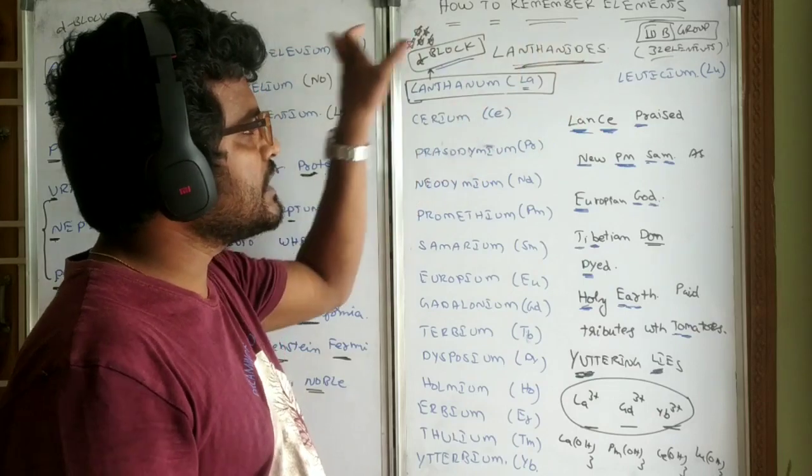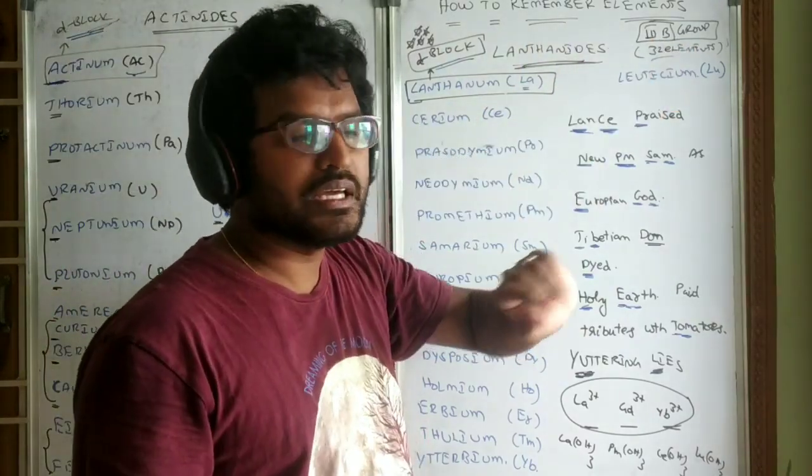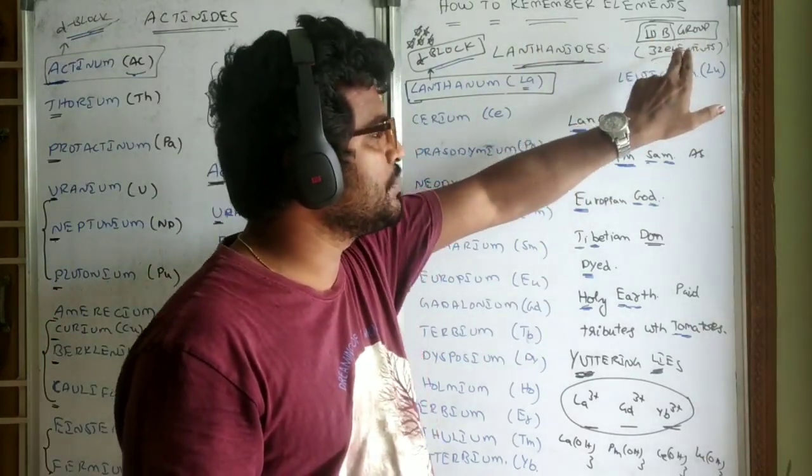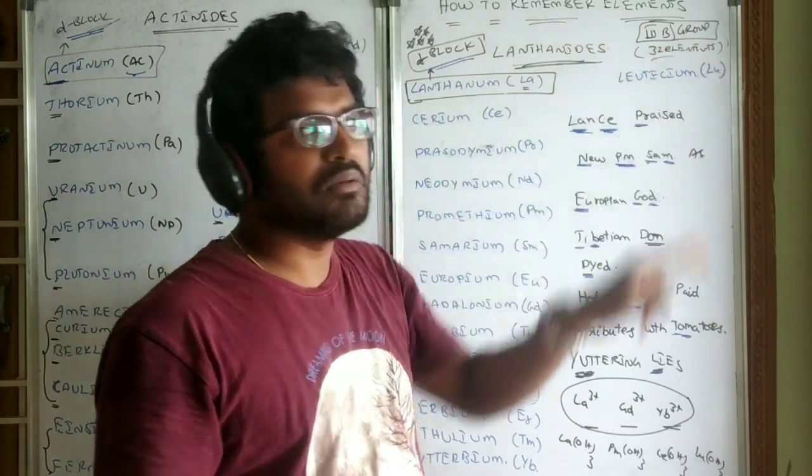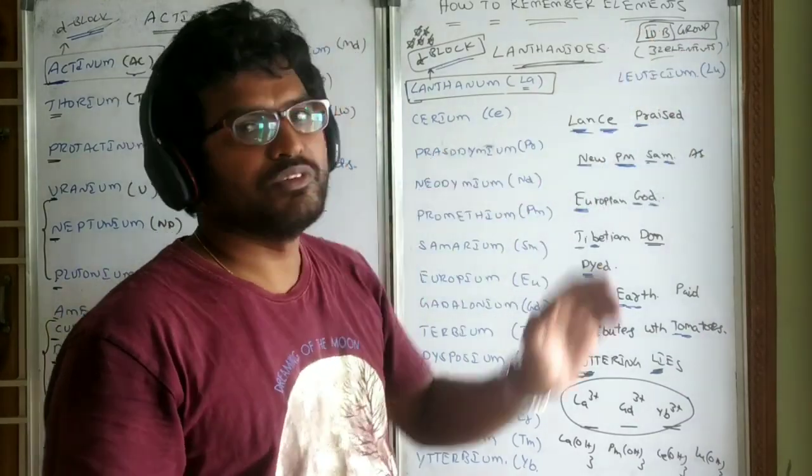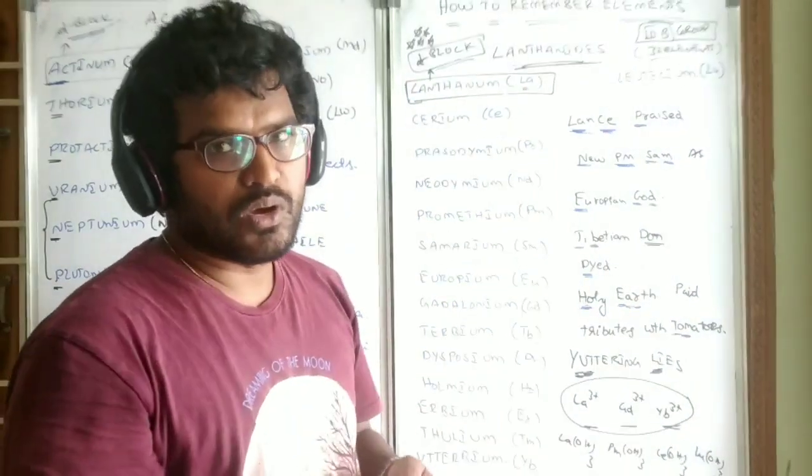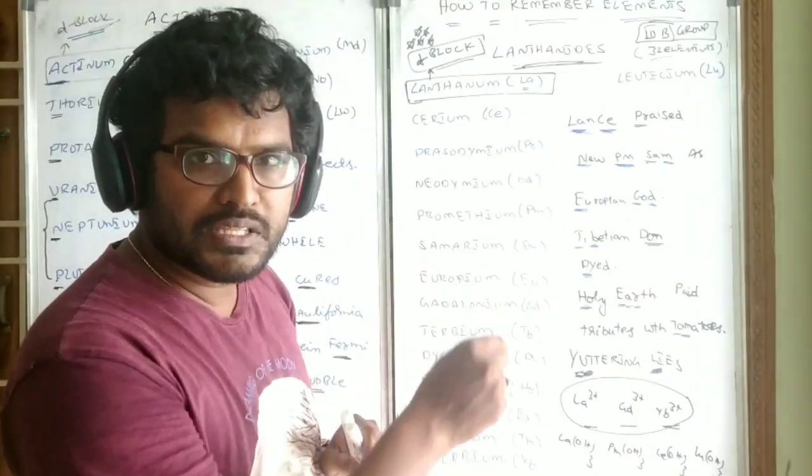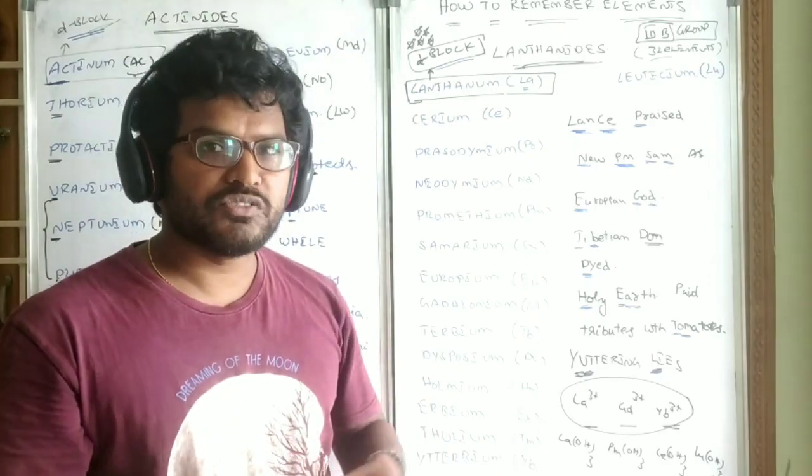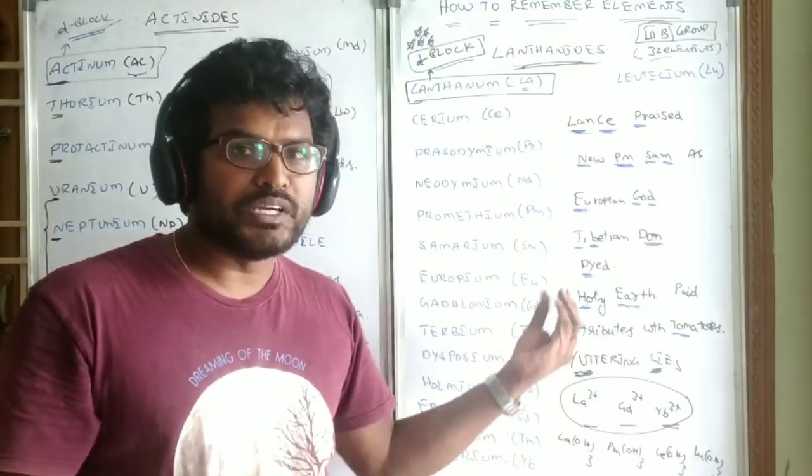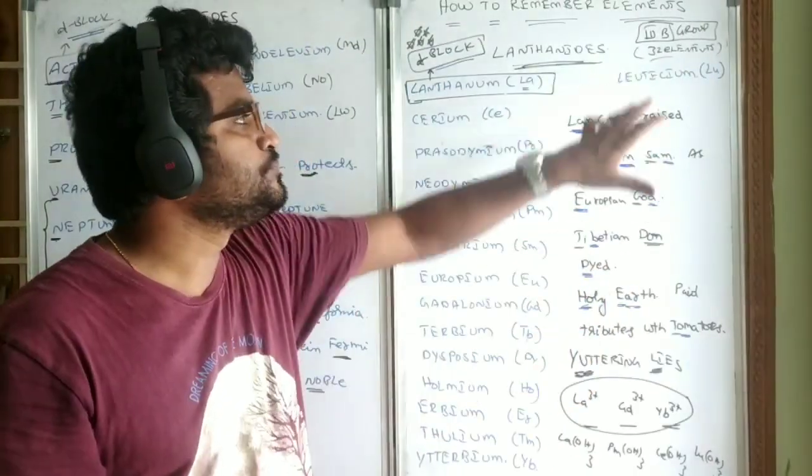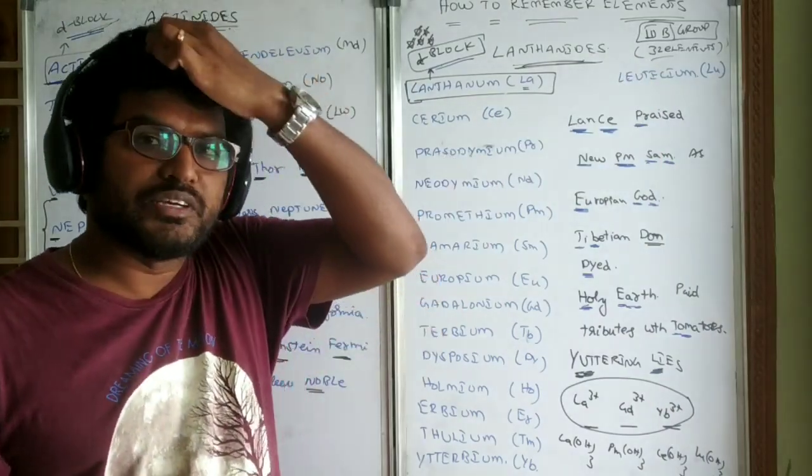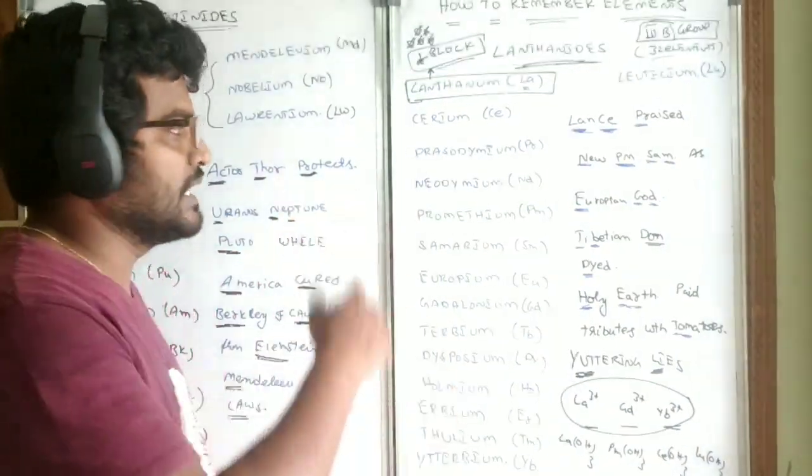Lanthanides and actinides are in the third group. The longest group in the periodic table with 32 elements is the third group, which is next to the s-block elements. In the first group, first s-group elements will be there. In the second group, second s-group elements will be there. And in the third group, that is nothing but third b-group, the f-block elements will be present.